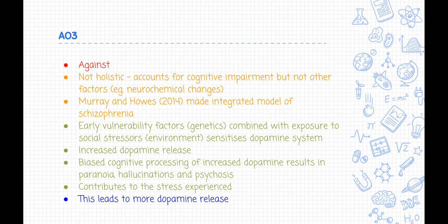However, Murray and House (2014) addressed this by creating a new integrated model of schizophrenia which is more holistic. Early vulnerability factors — genetics — combined with exposure to social stressors in the environment sensitizes the dopamine system, causing it to increase dopamine release. Biased cognitive processing of this increased dopamine activity results in paranoia, hallucinations, and the development of psychosis.